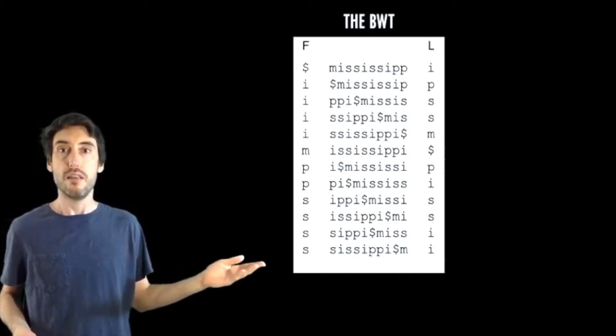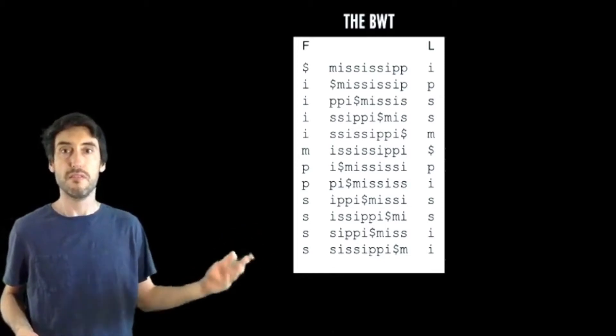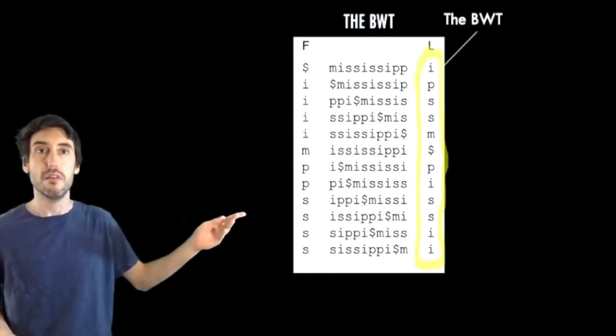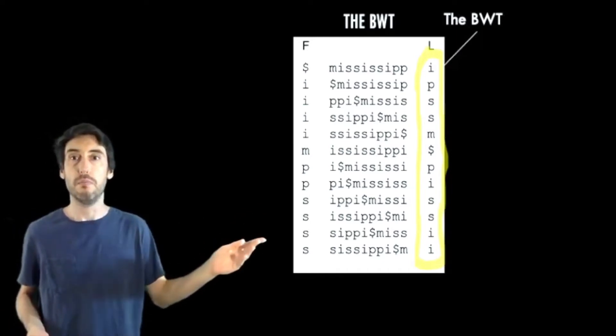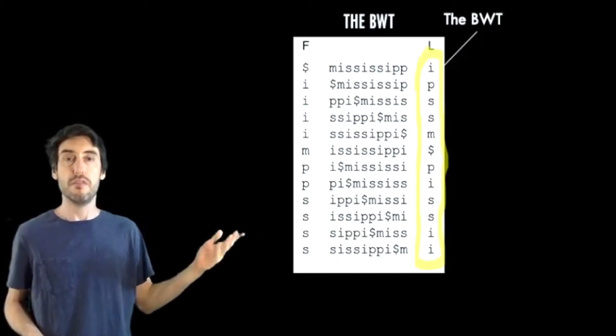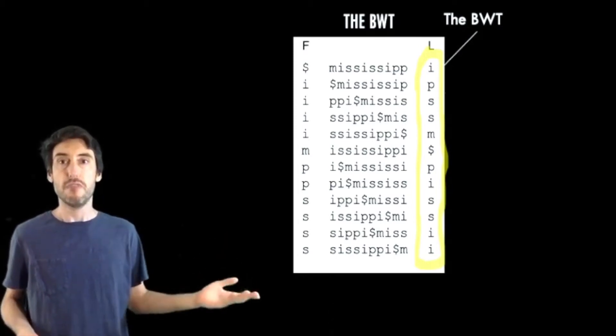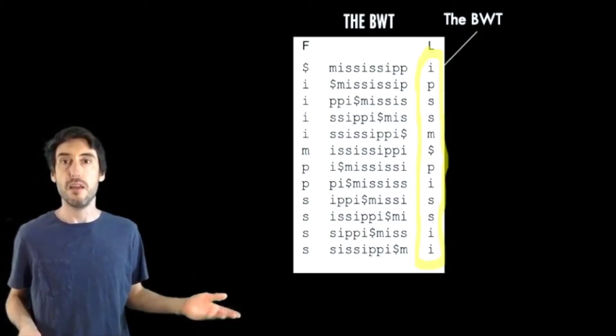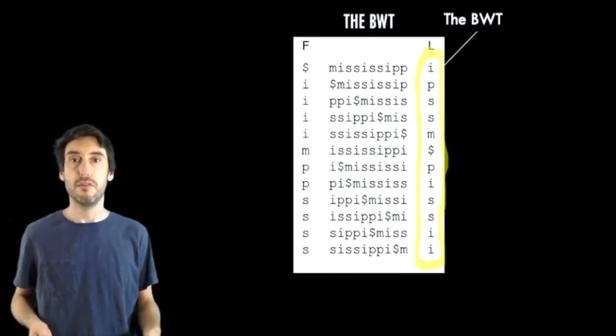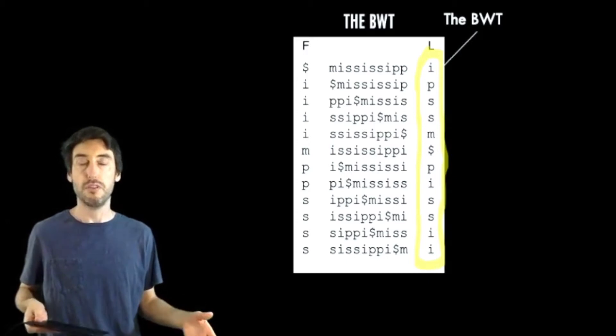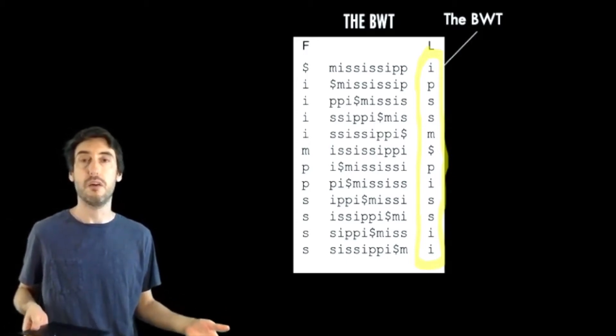And the L column contains all the letters which precede these characters, and if we read down the L column from top to bottom, what we obtain is the BWT of the string, in this case the BWT of Mississippi. Now this transformation is invertible, and it's useful for text compression. For example, it is used in text compression algorithm Bzip2.